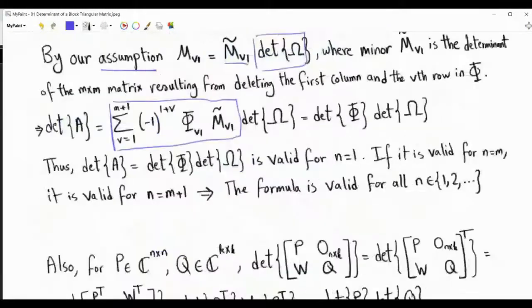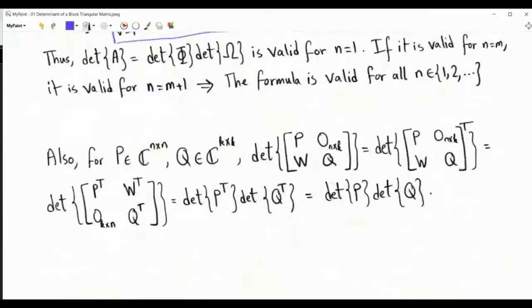There is no difference between the upper block triangular case we just investigated and the case of a lower block triangular matrix. So also in that case, the determinant equals the determinant of P times the determinant of Q.